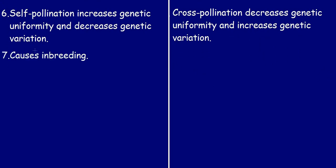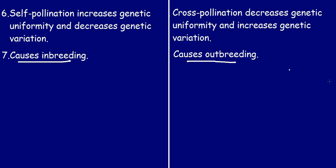The seventh point: self-pollination causes inbreeding, while cross-pollination causes outbreeding.